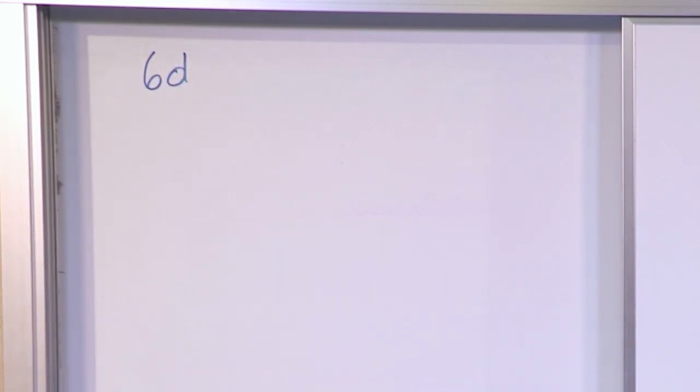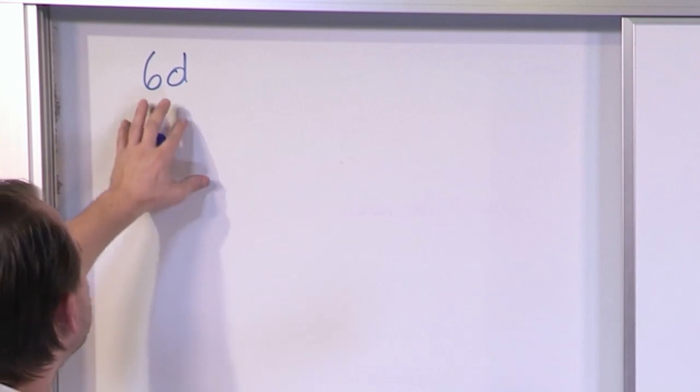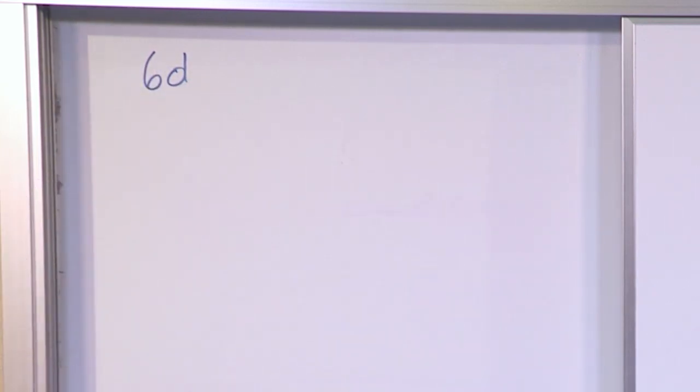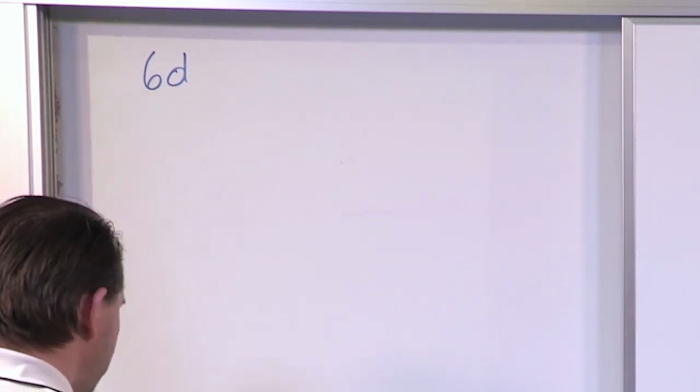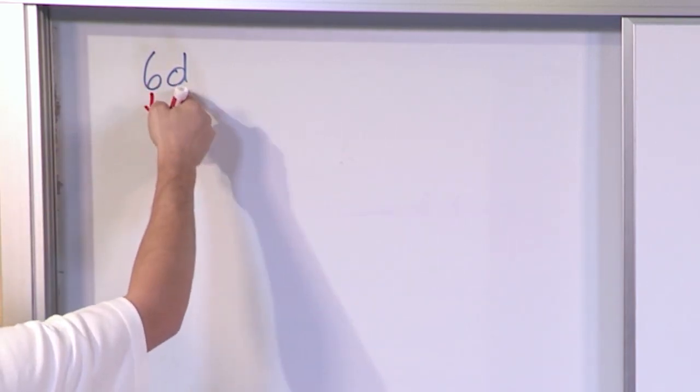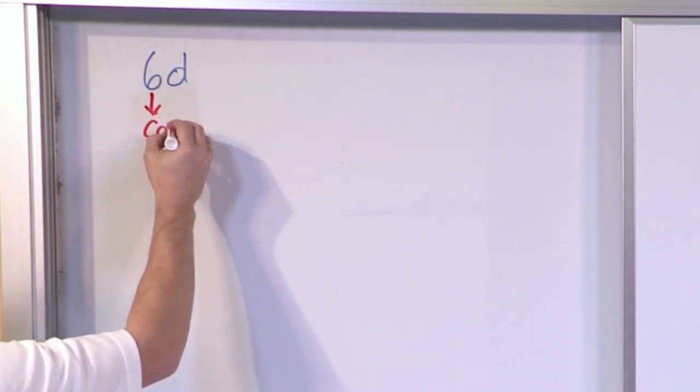Here we have an expression. This expression has only one term because there's only one sort of little unit together: 6 times d. And as a definition, you need to know that when someone talks about the coefficient, what they're talking about is the number that sits in front of the variable. So this is the coefficient.